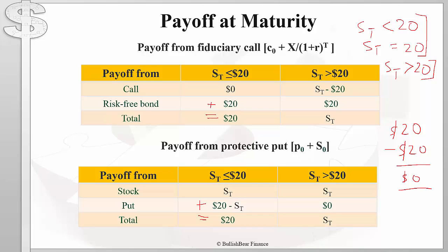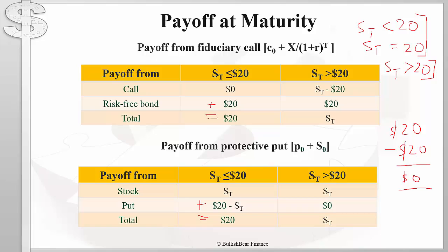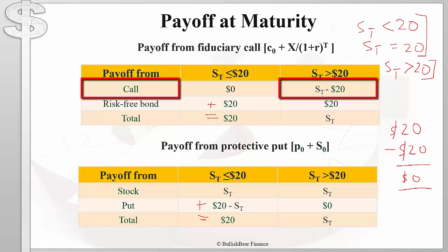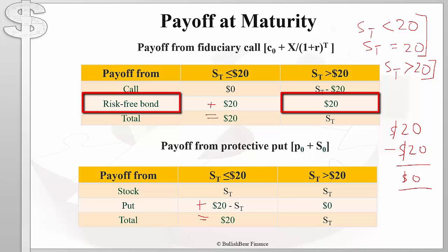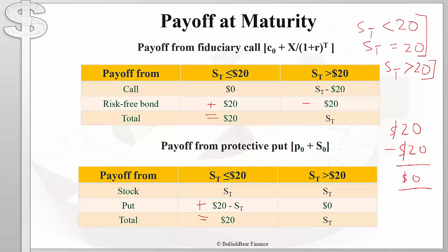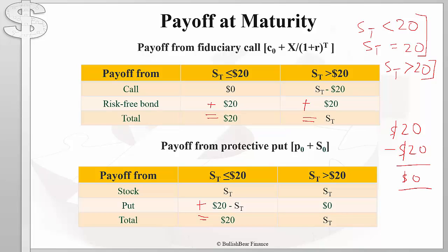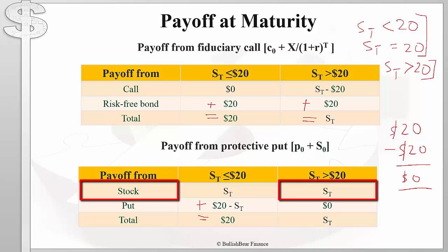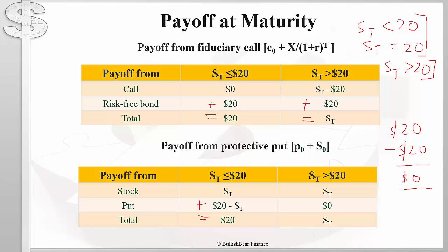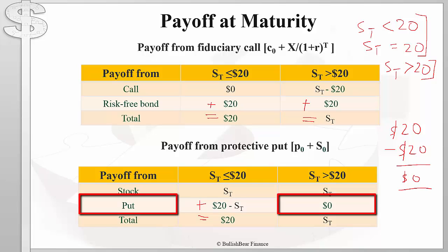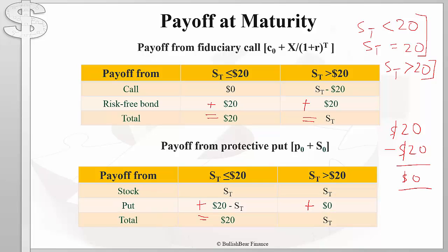Let's look at the other possibility where the stock price is more than $20. In that case, our call option expires in the money. The risk-free bond provides us with $20, and therefore our total inflow is the stock price.